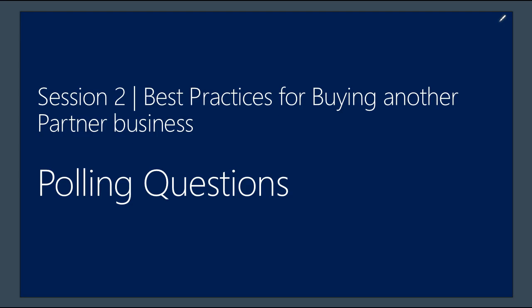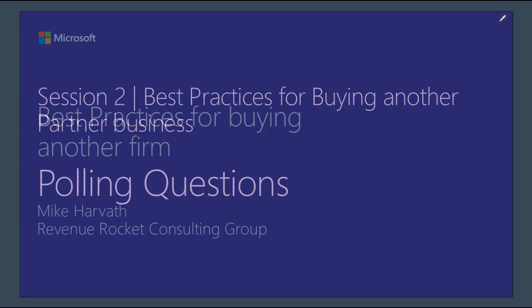The next polling question is: are you considering buying another partner in the next 12 months? Options include yes, I'm interested in acquiring another partner; maybe, still considering your options; it's a possibility but you're trying to figure it out; or you're not planning a transaction in the next 12 months but you're here to see what your options are. Most folks are still considering their options, but it's great to see that a few folks are planning on that. And with that, I'm going to hand it over to Mike Harbath to get into the meat of today's content.